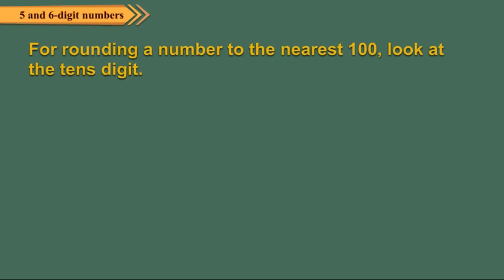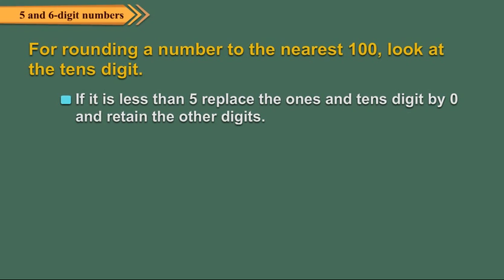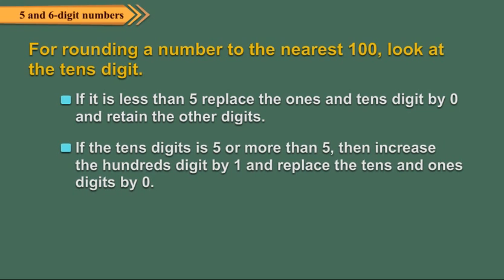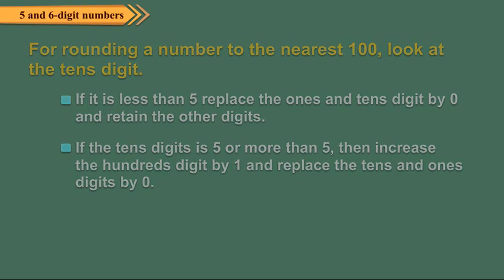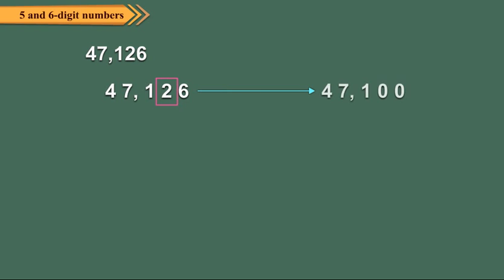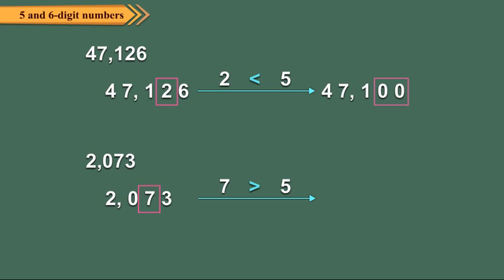For rounding a number to the nearest hundred, look at the tens digit. If it is less than 5, replace the tens and ones digits by 0 and retain the other digits. If the tens digit is 5 or more, increase the hundreds digit by 1 and replace the tens and ones digits by 0. For example, rounding 47126 to the nearest hundred: the tens digit is 2, so we replace the tens and ones digits by 0, giving 47100. To round 2073 to the nearest hundred, we look at 7, which is greater than 5, so we increase 0 by 1 and replace the tens and ones digits by 0, giving 2100.